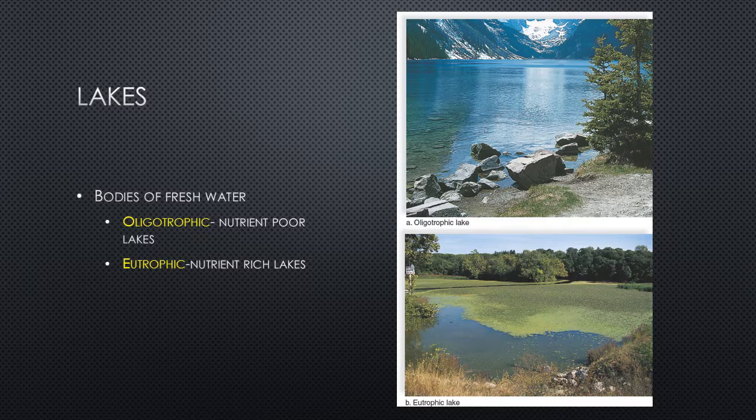Our second type of aquatic biome is lakes — bodies of fresh water. There are two types: oligotrophic lakes, which are nutrient-poor and usually found at higher altitudes, such as lakes in Rocky Mountain National Park within tundra or alpine coniferous forest areas. The nutrient-poor soil there means the lakes are nutrient-poor as well.